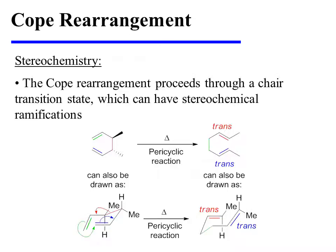The COPE rearrangement proceeds through a chair-like transition state, which can have stereochemical ramifications. In this example, the reactant can also be drawn in a chair-like arrangement. Since the stereochemistry of the two methyl groups has been specified for the reactant, we can place them about this chair-like transition state. Furthermore, we can place them in lower energy pseudo-equatorial positions. After the cope rearrangement has taken place, it becomes apparent that as a result of the positioning of the methyl groups, both of the alkenes in the product have the trans configuration.